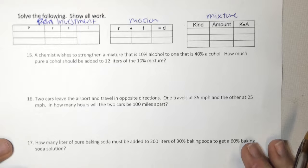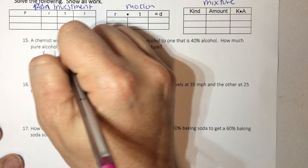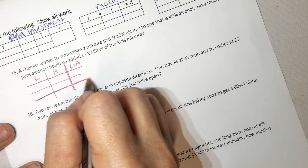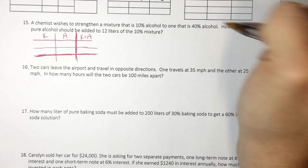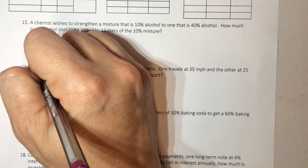So if we read the first one, it says a chemist wishes to strengthen a mixture. Right away, I know I'm doing mixture. So I'm going to just sketch my table. I need three rows. And I know that this one, I always thicken. So knowing that, it says it wishes to strengthen a mixture that is 10% alcohol to one that is 40% alcohol. How much pure alcohol should be added to the 10%?